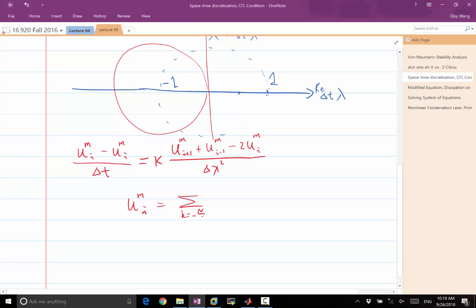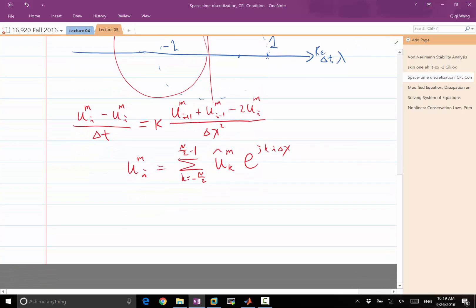k goes from minus n over 2 because of aliasing, and I have u hat m of k. Now this u hat is not a function of continuous time but a function of m, the discrete time steps, e to the j k i delta x.